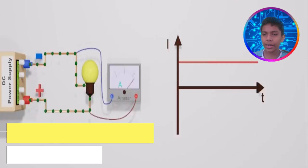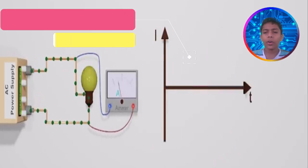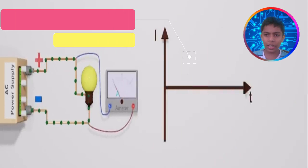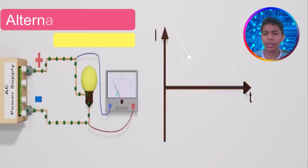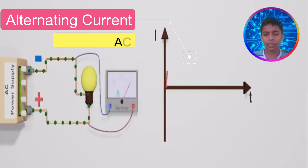Our second topic is going to be the alternating current. Alternating current can be simply defined as the current which changes its voltage with the time.